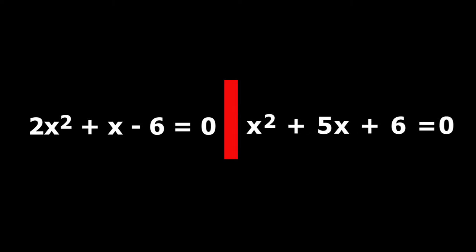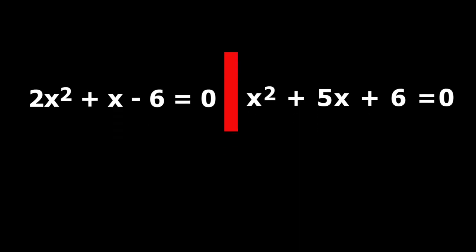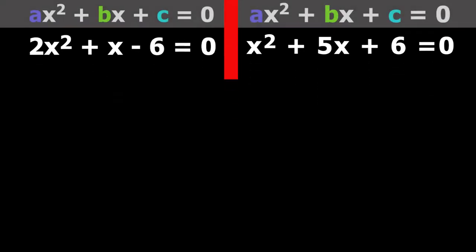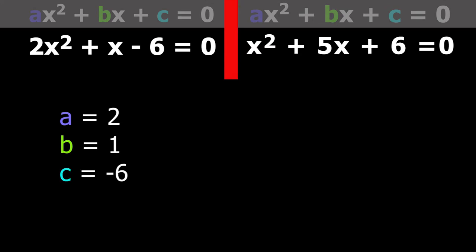and x squared plus 5x plus 6 equal to 0 are quadratic equations. If we compare these with the standard form of the quadratic equation, we get for the first equation: a equal to 2, b equal to 1, and c equal to minus 6; and for the second equation: a equal to 1, b equal to 5, and c equal to 6.